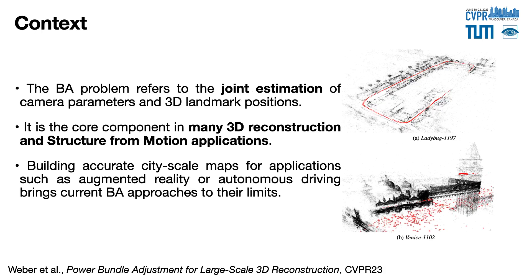The bundle adjustment problem refers to the joint estimation of camera parameters and 3D landmark positions. It is a crucial step in many 3D reconstruction and structure from motion applications. Nevertheless, it has to deal with the emergence of large-scale datasets with several thousands of poses, for instance in the fields of augmented reality or autonomous driving.